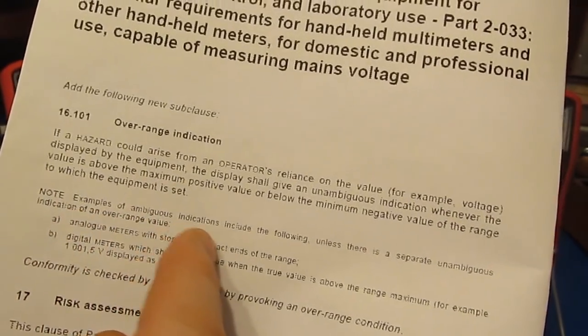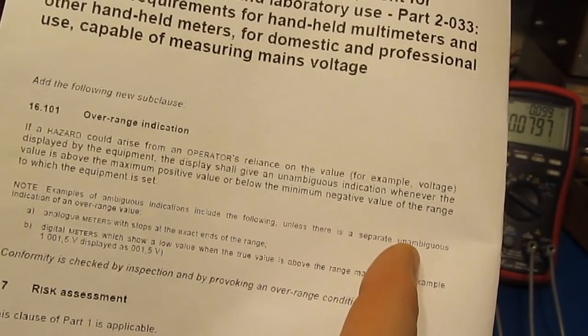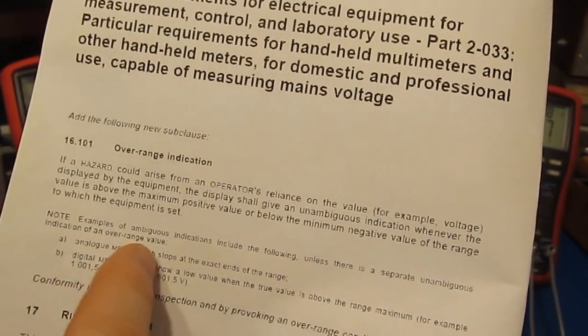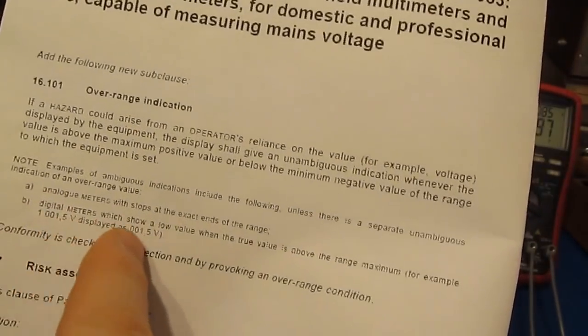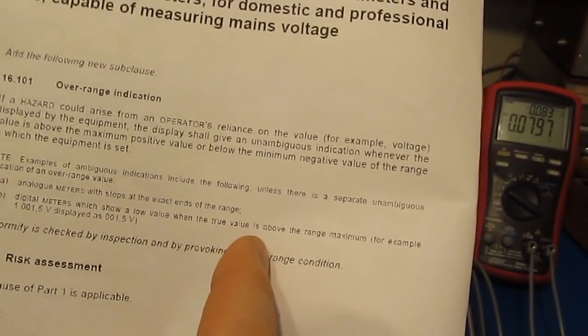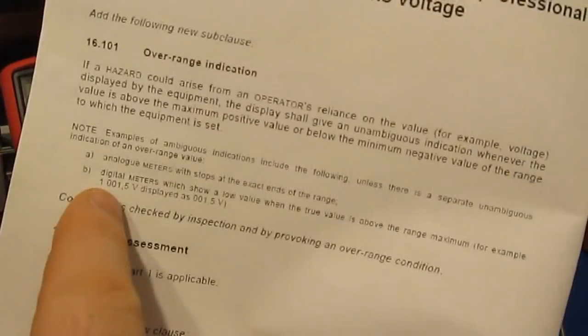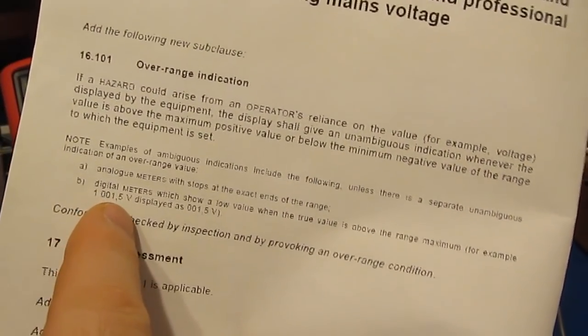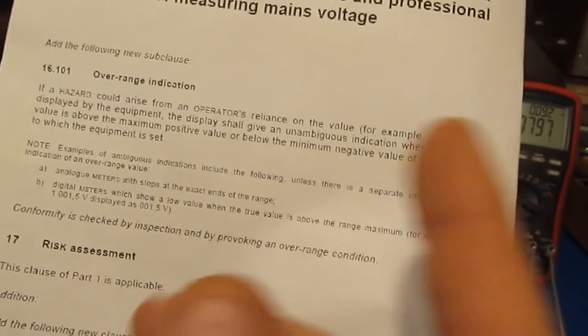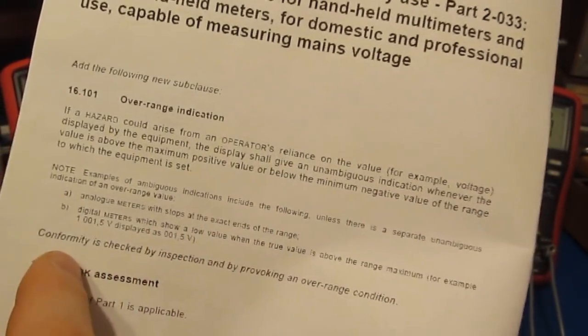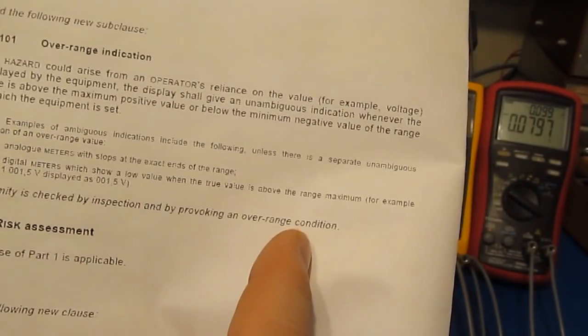Examples of ambiguous indications include the following unless there is a separate unambiguous indication of an overrange value. So note B: digital meters which show a low value when the true value is above the range maximum. For example, let's say it's 1001.5 volts and the meter's displaying 1.5 volts. That would obviously be a failure. Conformity is checked by inspection and by provoking an overrange condition.